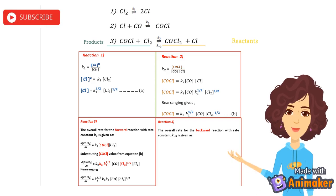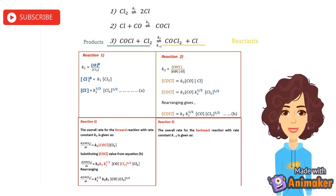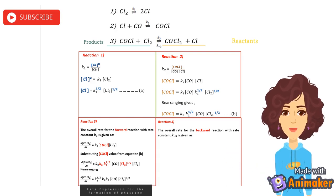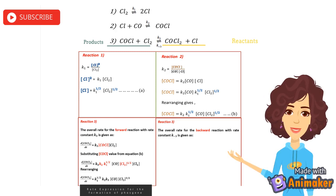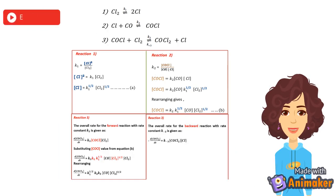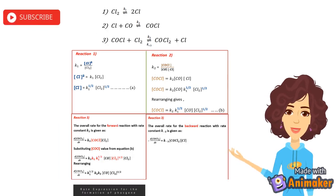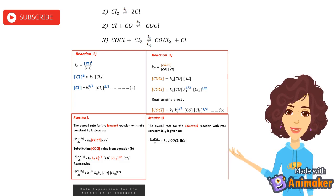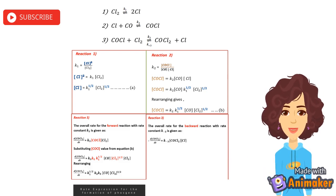The backward direction with rate constant K-3 shows the decomposition of phosgene. Here, since phosgene is being decomposed, the reactants are COCl2 and Cl. Since the rate of decomposition is also controlled by reaction 3, the overall rate is given as: minus d[COCl2]/dt equals K-3 times concentration of COCl2 times concentration of Cl. The minus sign occurs because phosgene is disappearing or being decomposed.